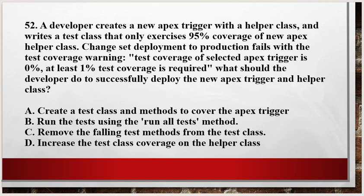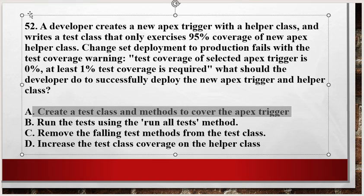Question number 52: A developer creates a new Apex trigger with a helper class and writes a test class that only exercises 95% coverage of the new Apex helper class. Change set deployment to production fails with a test coverage warning — test code of the selected Apex trigger is zero percent, and at least one percent test coverage is required. The options are: A: Create a test class and method to cover the Apex trigger. B: Run the test using the Run All Tests option. C: Increase the test class coverage on the helper class. The correct answer is Option A.